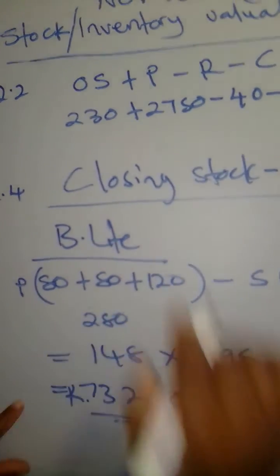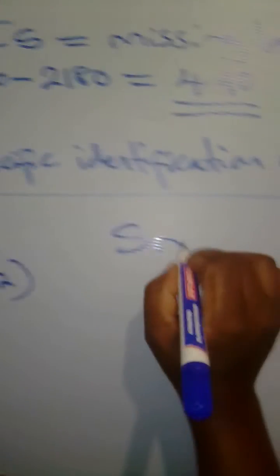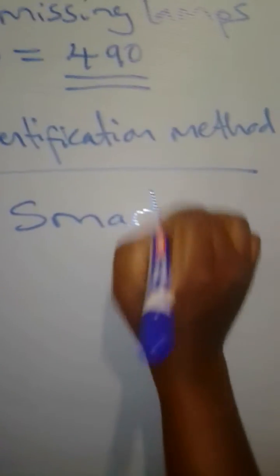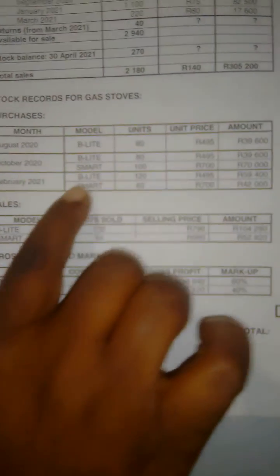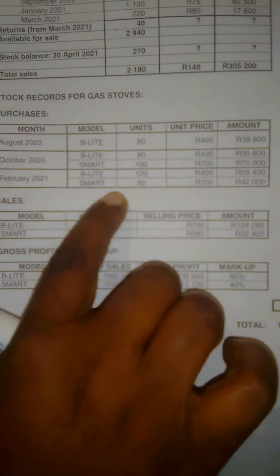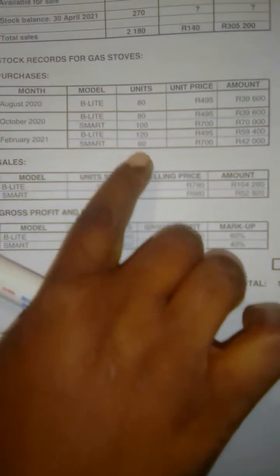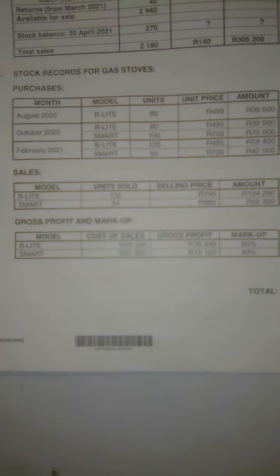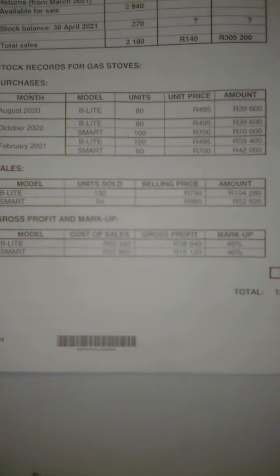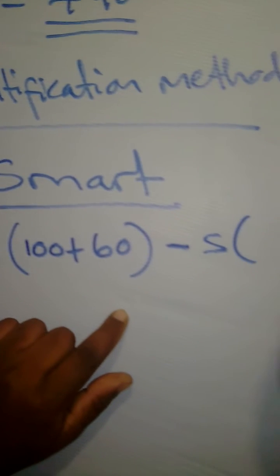Now let's check the Smart model. Looking at the purchases: in October and February, there are 100 items and 60 units respectively. So the total purchases are 100 plus 60, giving 160 units. Now we subtract the sales.